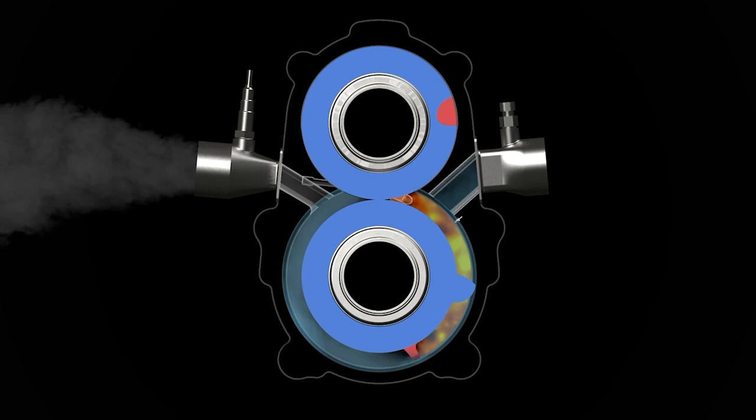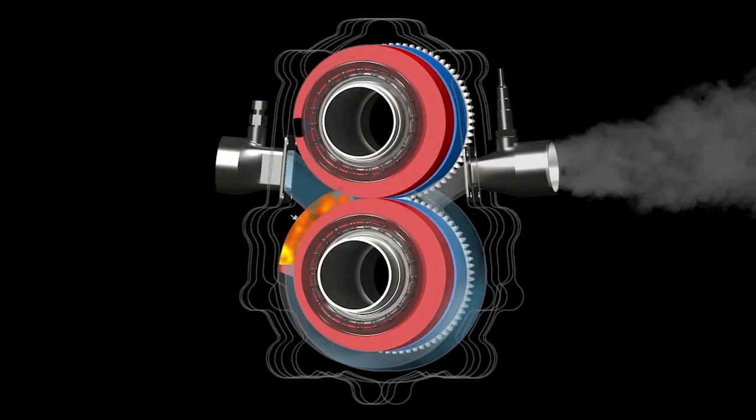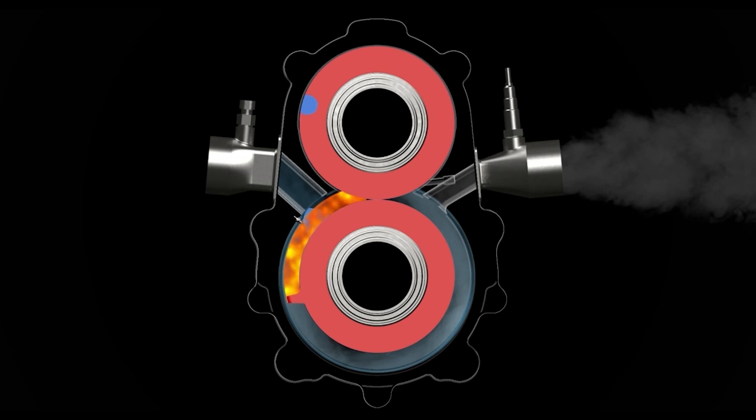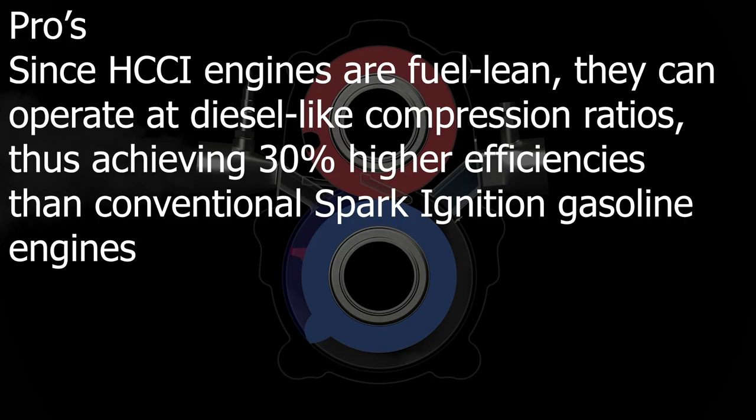Whereas with this engine, it is designed to run with self-igniting combustions and ignition can't ever happen at the wrong time. You see, the lower rotor is mechanically timed for ignition so it will never miss its ignition point unlike other engines. Why is this good? Well there are actually many reasons. Since HCCI engines are fuel lean, they can operate at diesel-like compression ratios, thus achieving 30% higher efficiencies than conventional spark ignition gasoline engines.